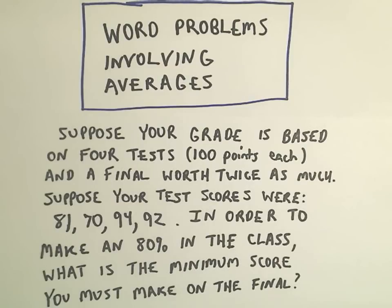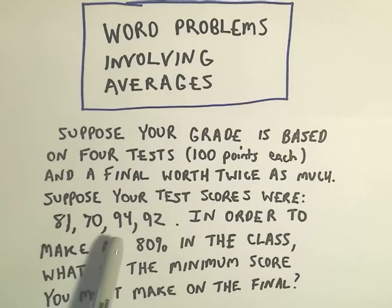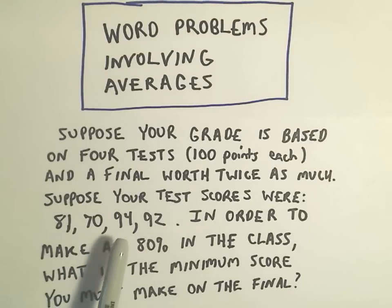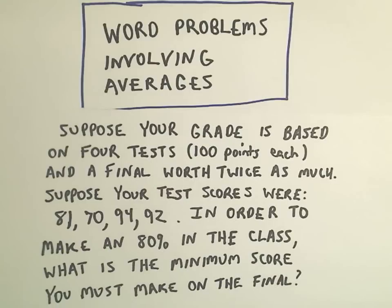Suppose your test scores were: you made an 81 on the first one, then you slipped a little bit and made a 70, but then you came out strong, you made a 94 on test 3 and a 92 on test 4.